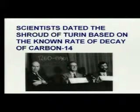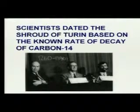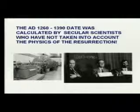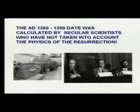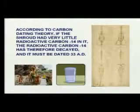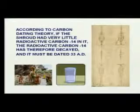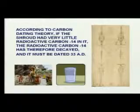The shroud was made from flax. The Shroud of Turin, if authentic and manufactured at the time of Christ around 33 AD, would already have had radioactive C14 in it because it's made from flax, which is a plant. Using the known rate of decay, specialists at the British Museum have said that the Shroud of Turin based on carbon dating is dated to 1260–1390 AD. That date was calculated by secular scientists who haven't taken into account the physics of the resurrection.